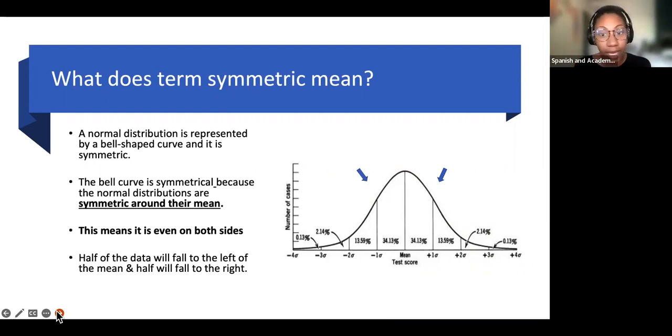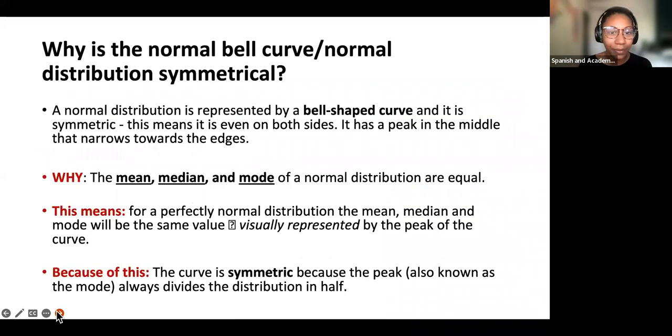This is not the case for a positively skewed and negatively skewed distribution, so it's really important to note what are some of the key characteristics about a normal distribution or a normal bell curve so we can differentiate them between a positively skewed and negatively skewed distribution. So why is the normal bell curve symmetrical? It's because the mean and median and mode all line up in the middle. I'm really emphasizing these details because that is not the case for our skewed distributions which we'll talk about next.